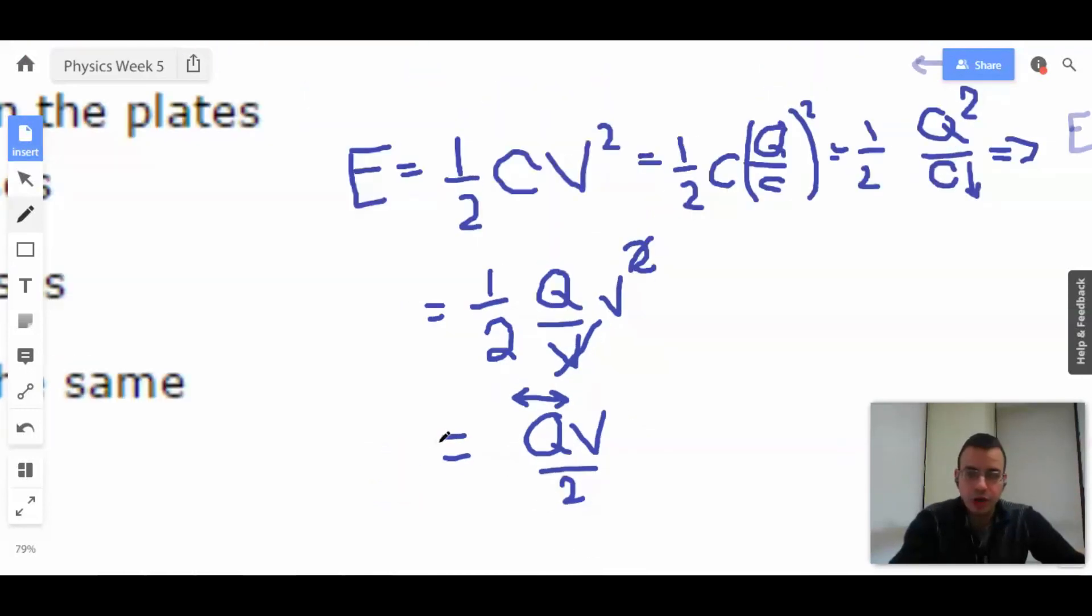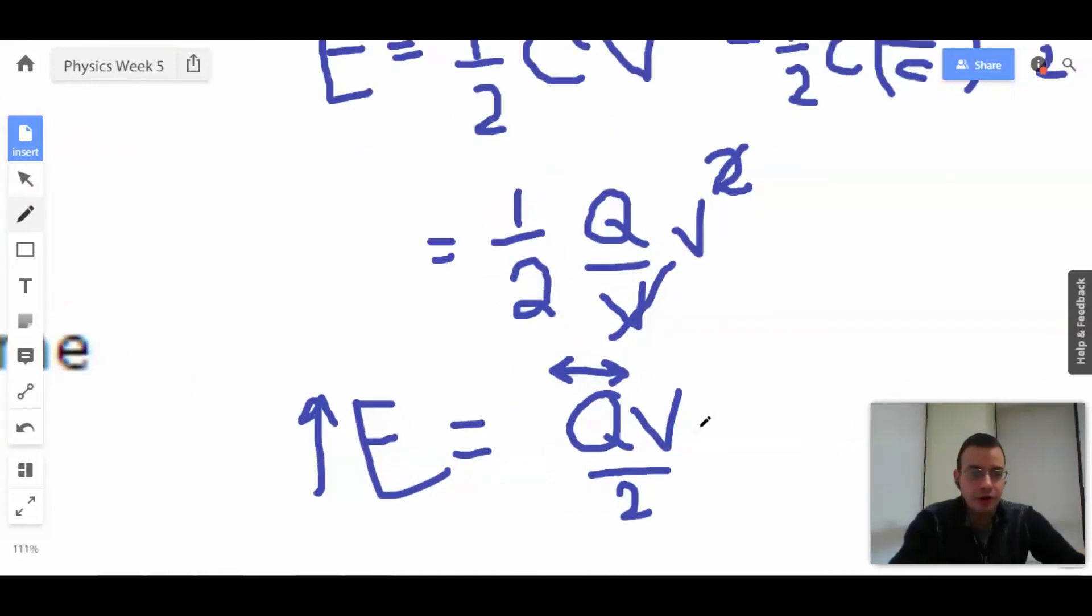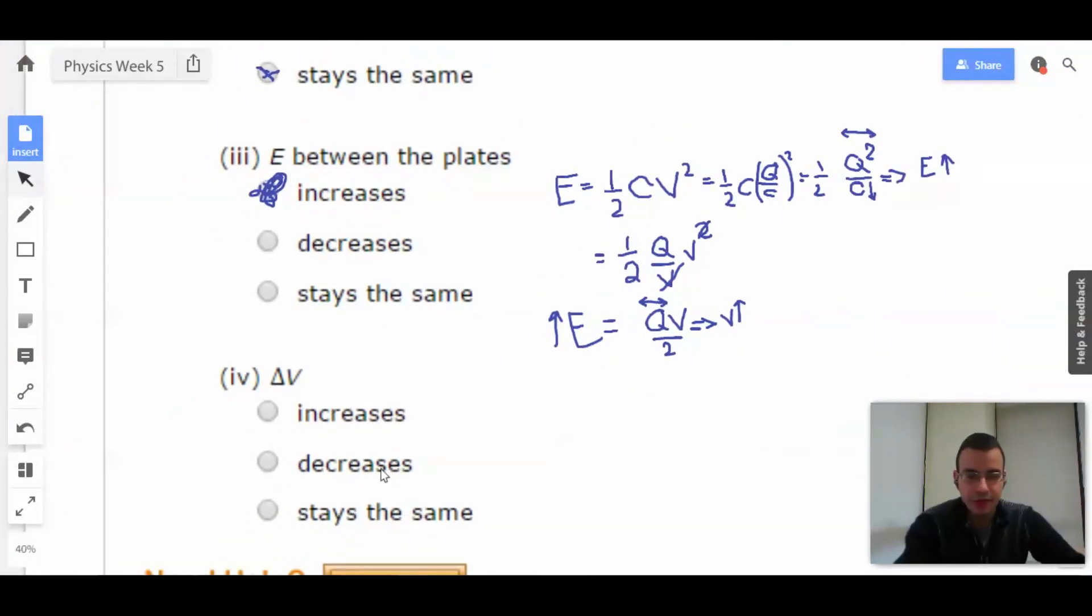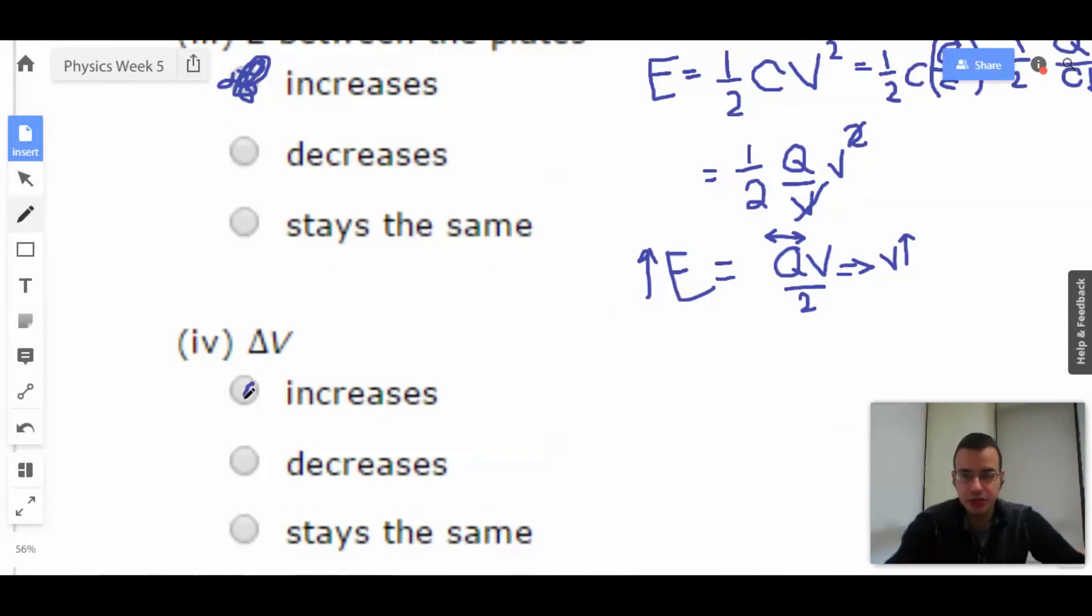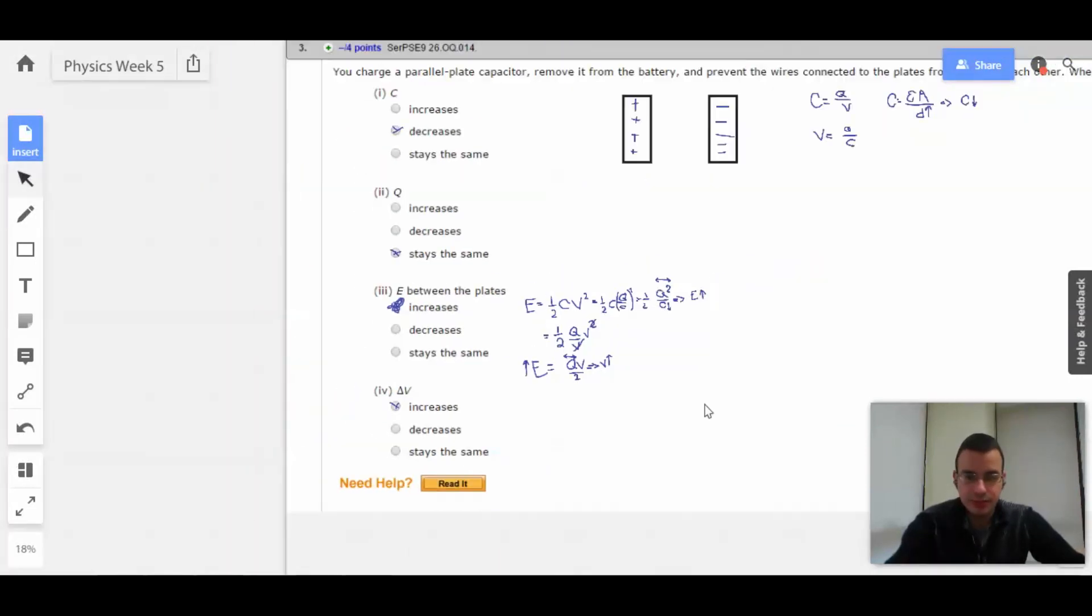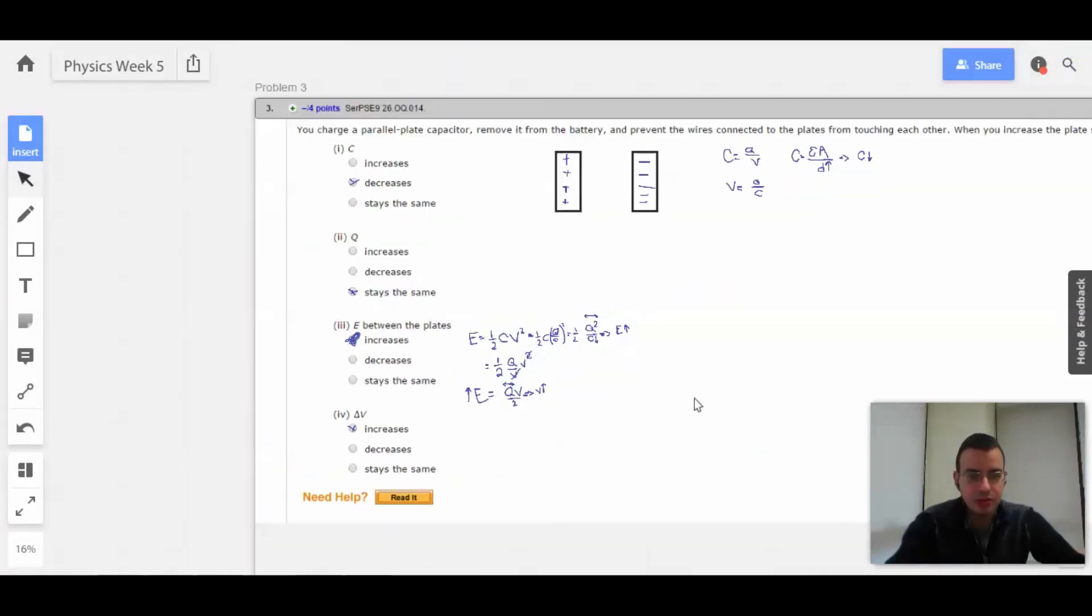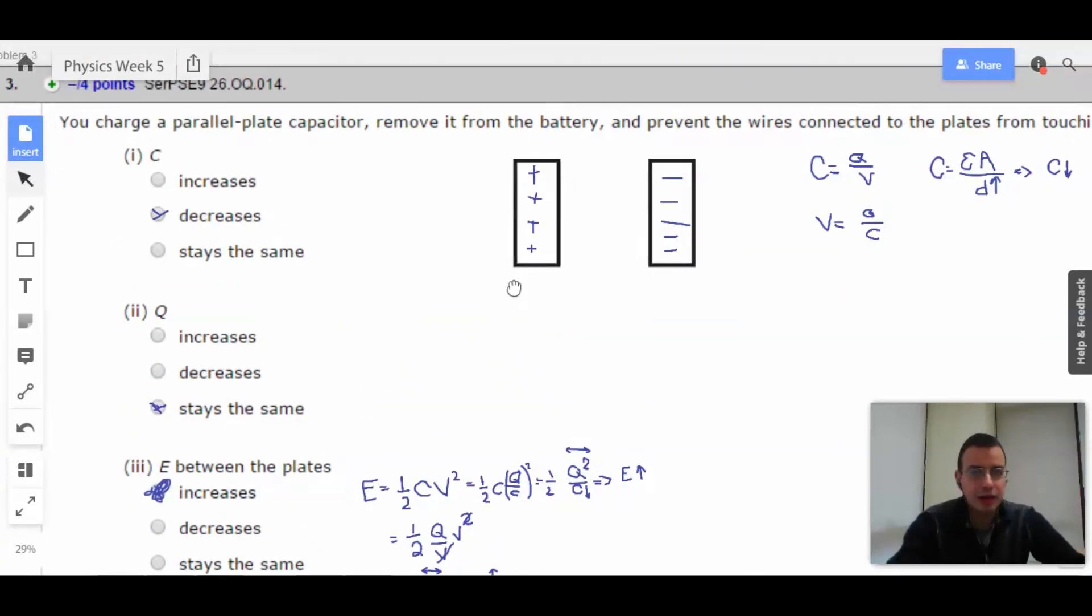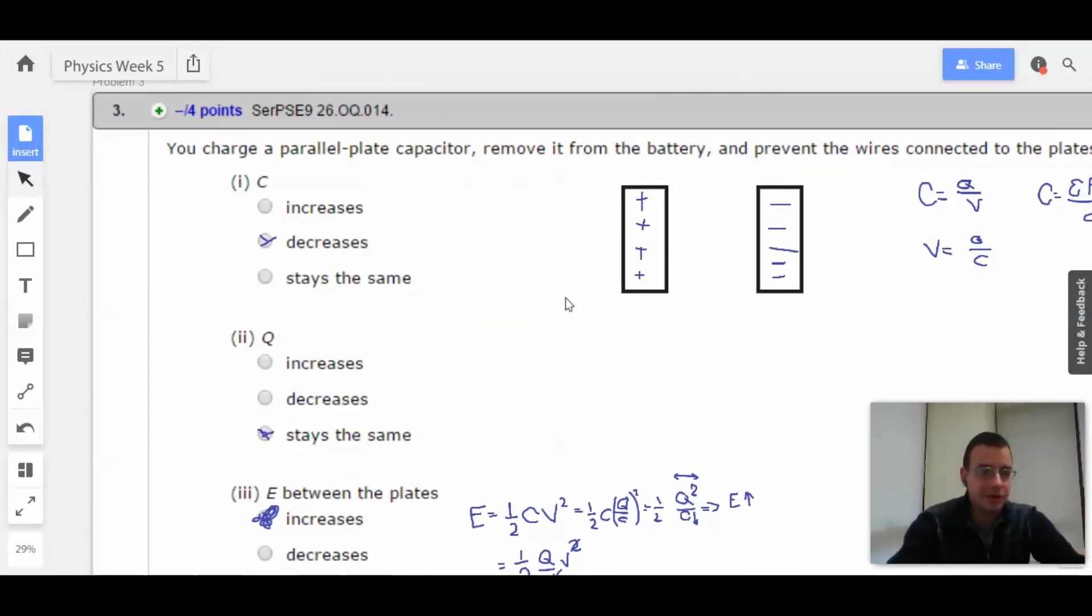Bam. We know that Q stays the same. We know that energy goes up. Energy goes up. Therefore, voltage has to go up. Bam. There we go. And now we have delta V, the voltage, increases. All right. That seems reasonable. And that's all we do with this question. All right. On to number four.